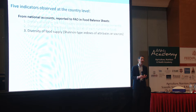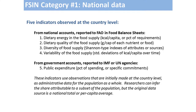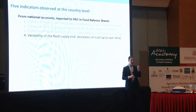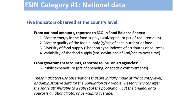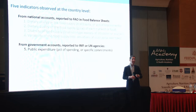One more national datum of great interest is public expenditure — for the Maputo Declaration of CAADP, African governments and others have agreed to spend a certain amount of their government budget on agriculture and nutrition, which is tracked this way. For market-level data, the indicators of widest use are: the relative price of food compared to everything else, food affordability compared to wages, and volatility of food prices over time.